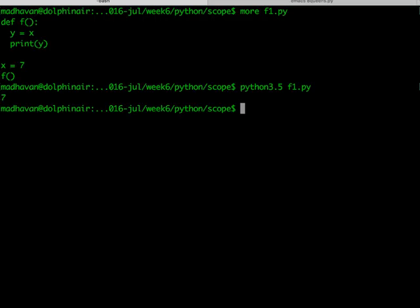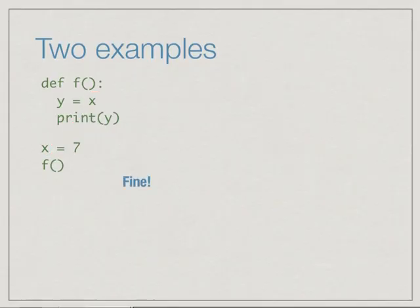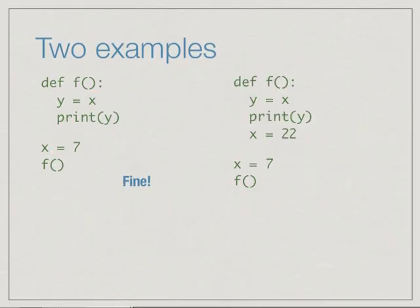Now what if we do this? This is exactly the same function except that after printing the value of y, it sets x equal to 22 inside f. Now what happens?